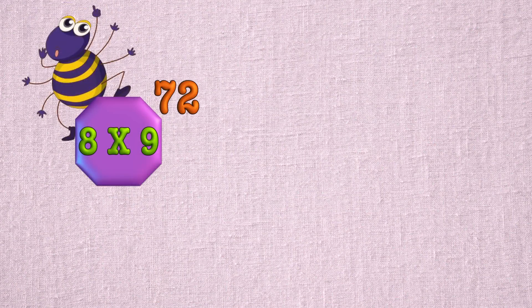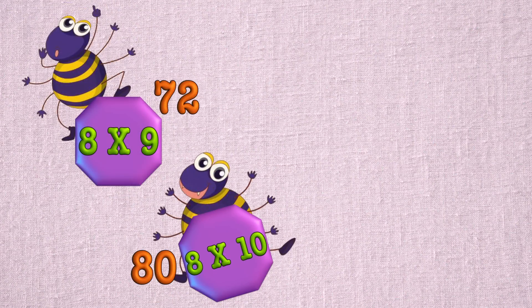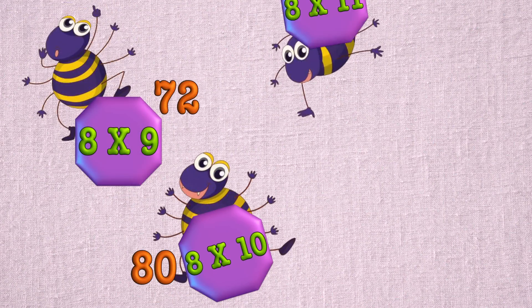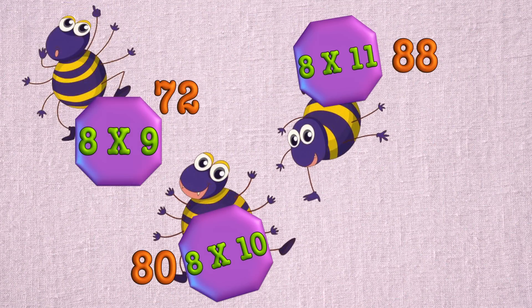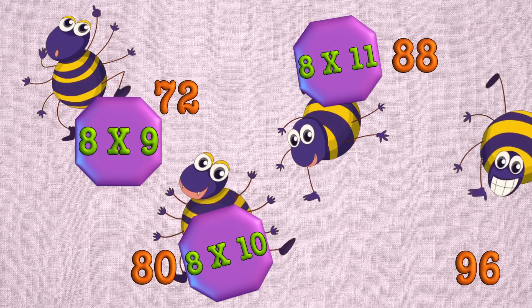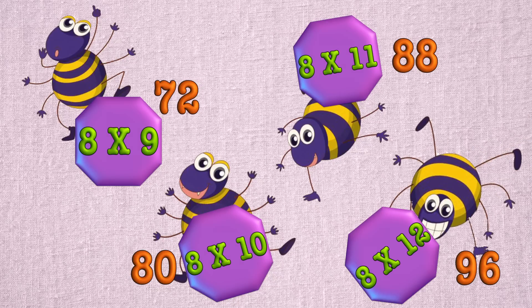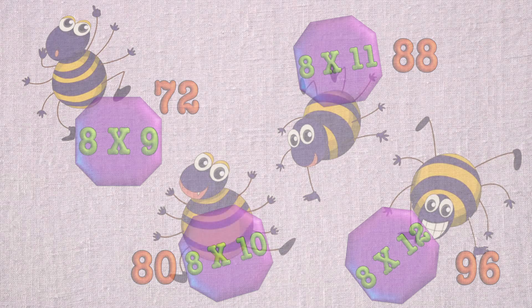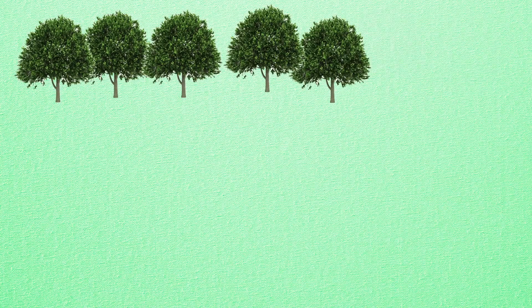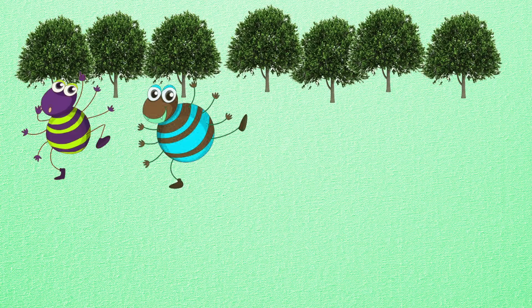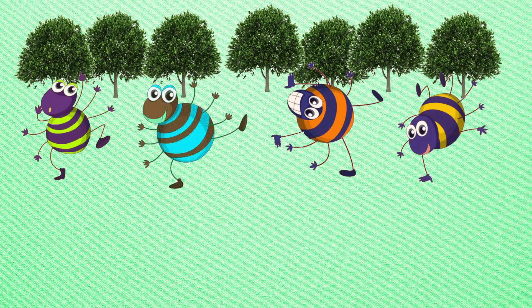8 times 9 is 72. 8 times 10 is 80. 8 times 11 is 88. 8 times 12 is 96.